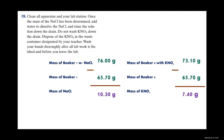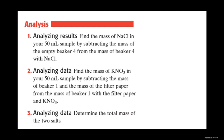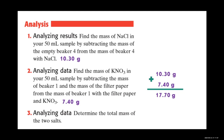Clean all apparatus at the lab station. Once the mass of the sodium chloride has been determined, add water to dissolve it and rinse it down the drain. Dispose of potassium nitrate according to instructor directions. Wash hands thoroughly. The masses of the beakers with the salts minus the empty beaker masses gave us exactly how many grams of each salt we recovered. For the sodium chloride we got 10.3 grams, for the potassium nitrate 7.4 grams, and the total mass of the two salts was 17.70 grams.